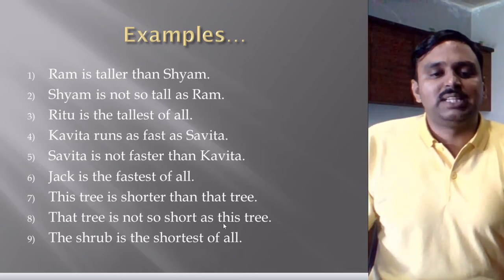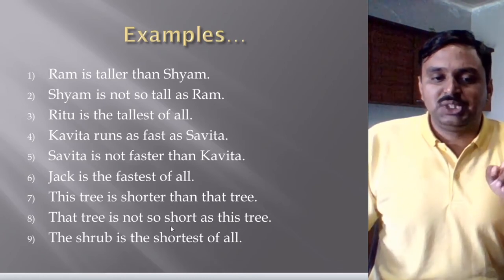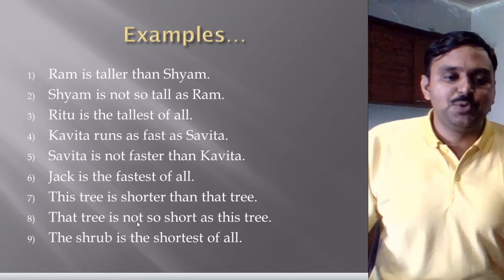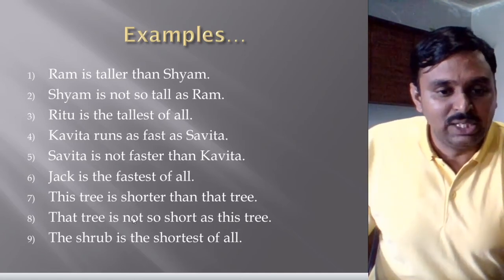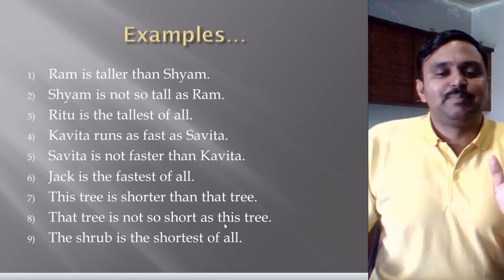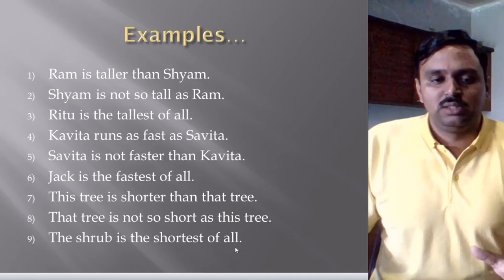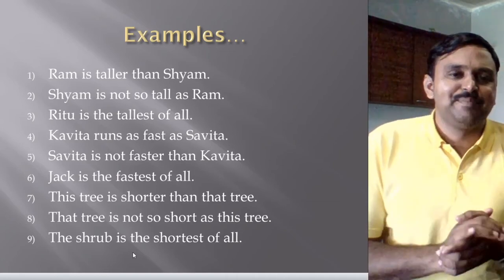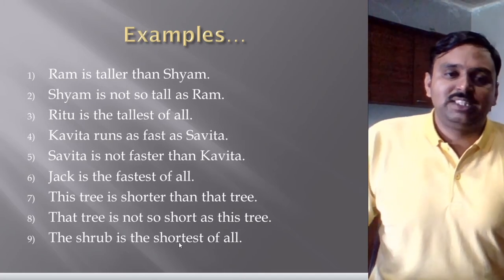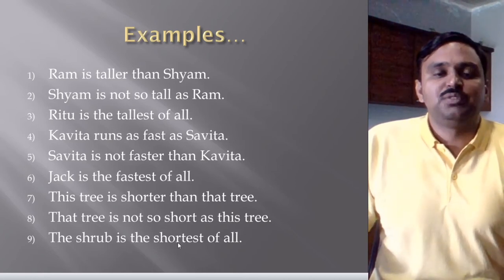Number eight: 'That tree is not so short as this tree.' 'Shorter' becomes 'short' — adjective first form — and 'not so' is used before it, with 'as' after it. When we change comparative to positive, we make it negative using 'not so...as.' This is an example of positive degree. Number nine: 'The shrub is the shortest of all.' A shrub is a small bush, and it is the shortest of all. 'The' is used and 'shortest' — adjective third form — is used, so this is superlative degree.